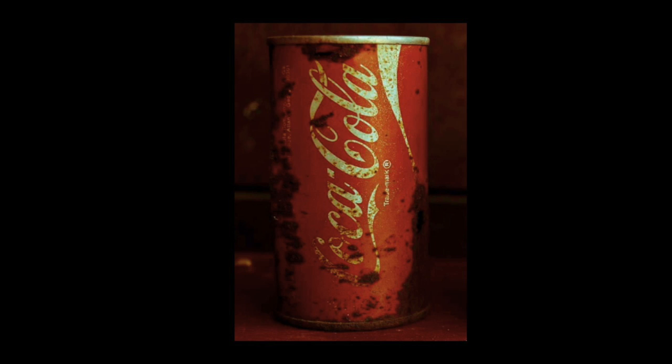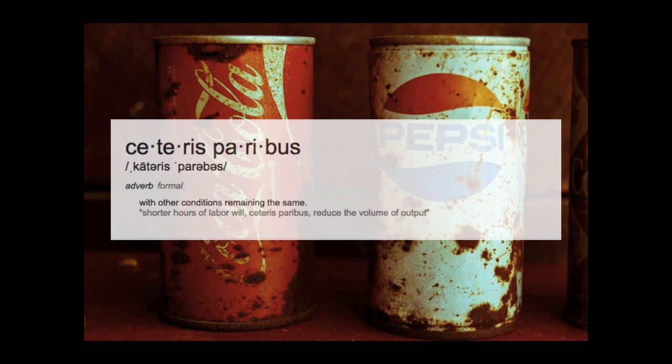The concept in economics to describe the other factors not changing is called Ceteris Paribus, which means everything else remains constant — only one variable changes. It's similar to when you do experiments in your science class: you only change one variable and everything else is held constant. It's the same concept in economics — you change one thing and hold everything else constant.